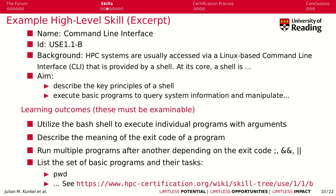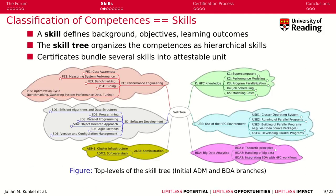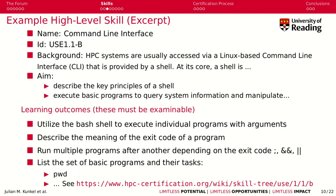Certificates bundle several skills into testable units. As an example skill — 'Command Line Interface' found at USE 1.1 — you go into the Use branch, Use 1 is cluster operating systems, and nested there you find command line interface. Each skill has a short background, learning aims, and learning outcomes, which are abbreviated here. These learning outcomes must be examinable, which is of course the goal for certification.